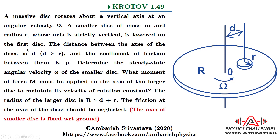The question says that a massive disc rotates about a vertical axis at an angular velocity capital Omega. A smaller disc of mass small m and radius r, whose axis is strictly vertical, is lowered on the first disc. The distance between the axes of the discs is small d, where d is greater than r. The coefficient of friction between them is mu.